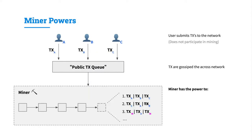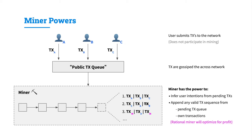Miner extractable value occurs due to the powers that the miner has. When a user submits a transaction to the blockchain network, these transactions are gossiped through the network and we can model their pending status as a public transaction queue. The miner has the power to build blocks from transactions taken from this public transaction queue. In particular, it can infer the user intentions from these pending transactions, and with the new blocks, it can append any valid transaction sequence from the pending transaction queue or injected transactions of its own.